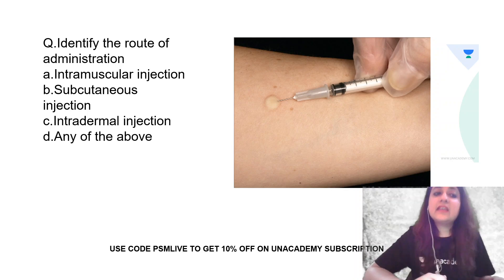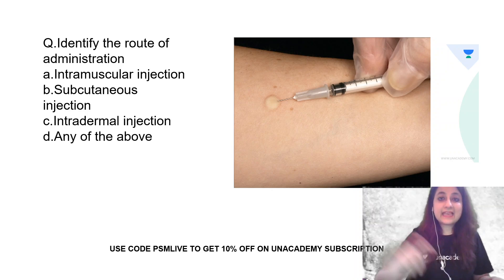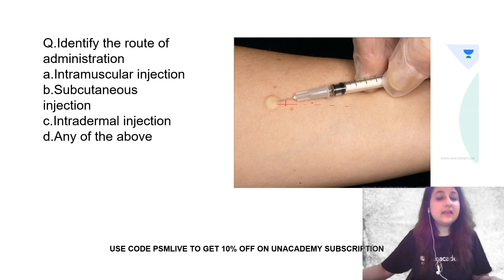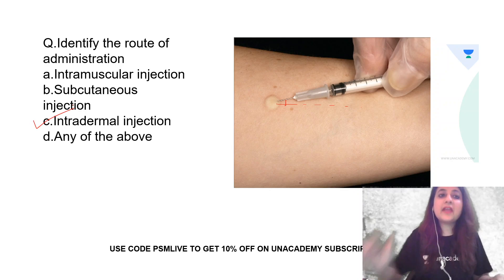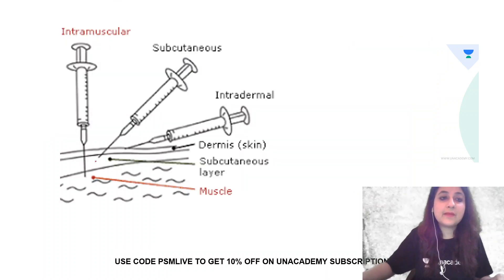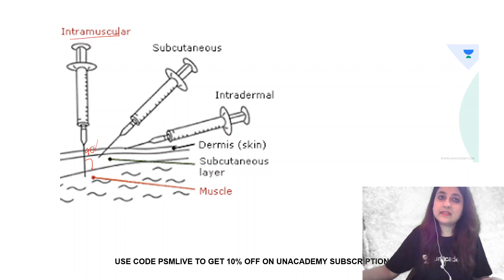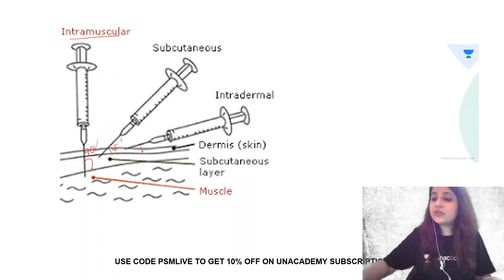Can you identify the route of administration shown here — is it A, B, C, or D? Look at this: it is almost at an angle of 10 to 15 degrees with the skin surface, so this is an intradermal injection. Intramuscular goes at 90 degrees — look here, this is intramuscular. All our COVID vaccines are being given by this route. Subcutaneous is almost at an angle of 45 degrees to the skin surface, and intradermal is almost parallel.